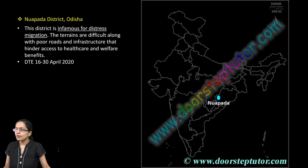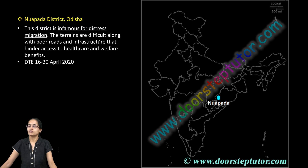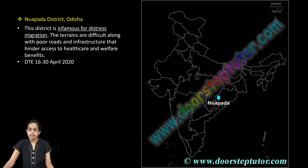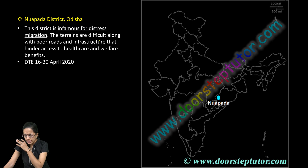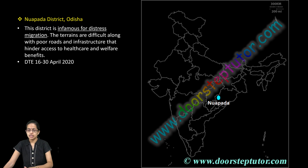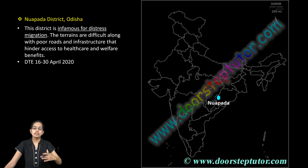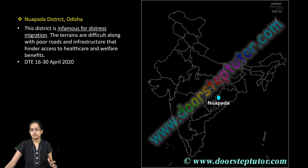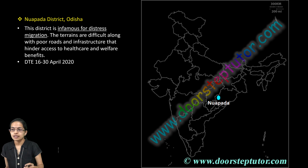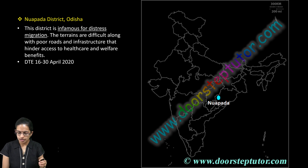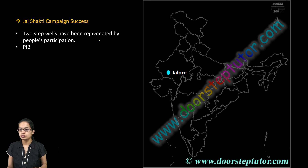The next is Naupada district, which is in Odisha. It is known for distress migration — again from Down to Earth. You have extremely poor roads and infrastructural facilities, and conditions are so poor that even basic access to healthcare cannot be achieved. So Naupada is a very important place in news these days.